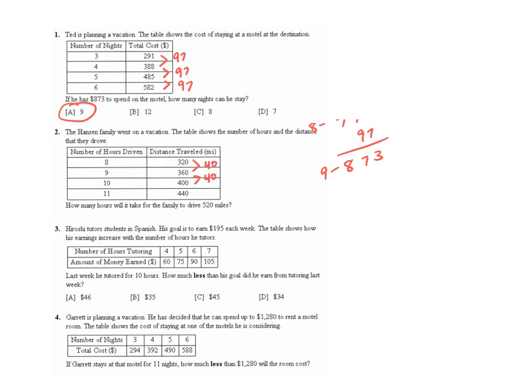So we can check to make sure that that really is 40, but it is. So we just want to find out how long it'll take to get 520. So 440 was 11 hours. If we add 40 more, that's 12 hours. 40 more, that's 13 hours. So your answer is 13 hours.